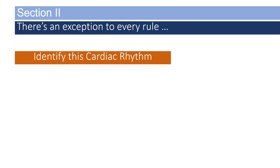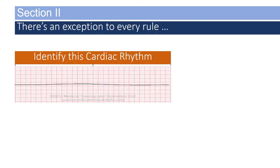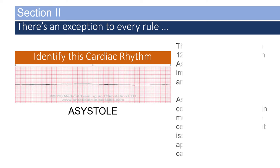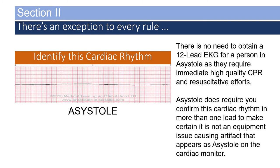Can you identify this cardiac rhythm? If you identified this as asystole, you are correct. There's no need to obtain a 12-lead EKG for a person in asystole, as they require immediate high-quality CPR and resuscitative efforts. Asystole does require you to confirm the rhythm in more than one lead to ensure it is not an equipment issue causing false asystole.